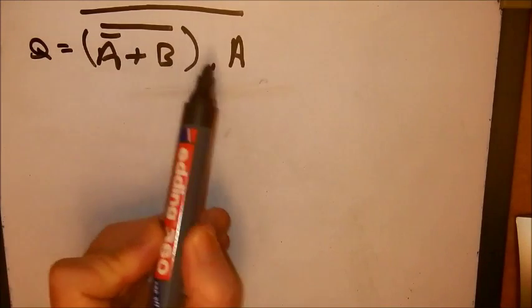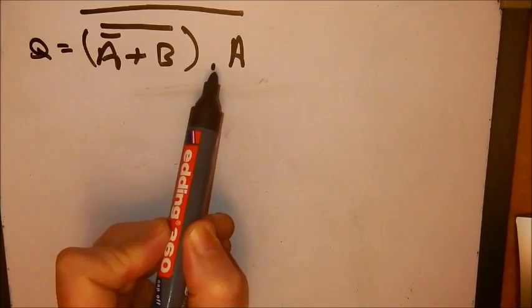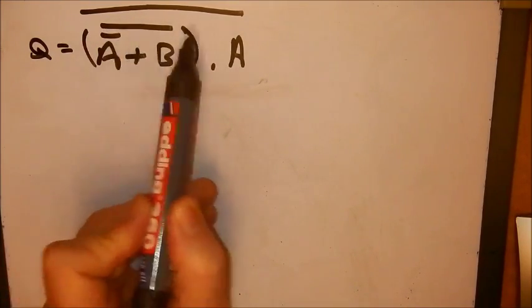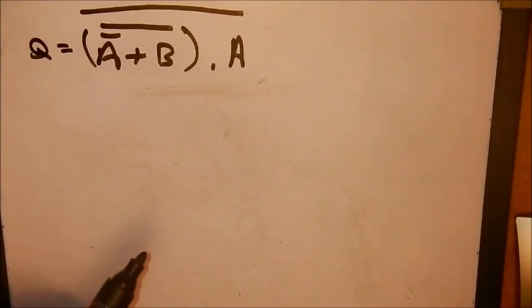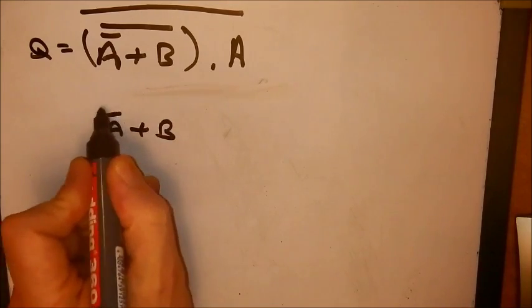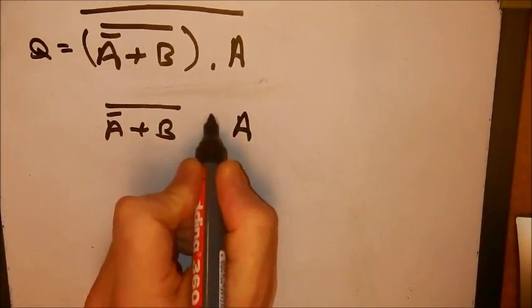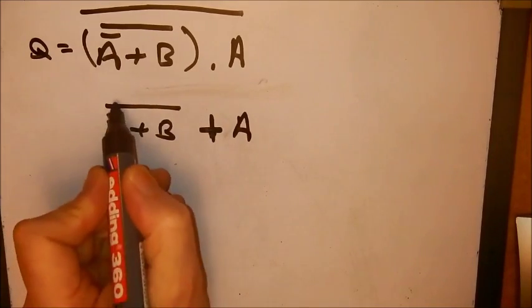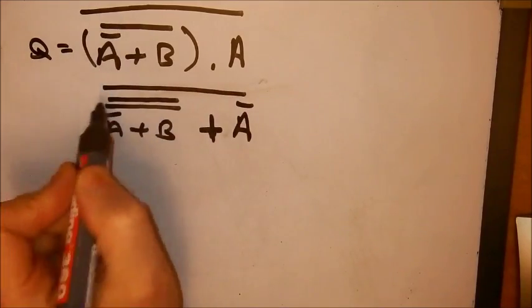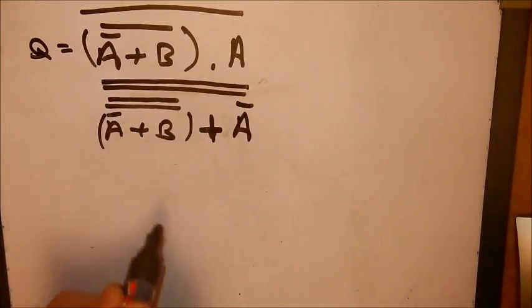But I've got a kind of gut feeling here that if I was to apply De Morgan's on the AND operator here, and I NOT the individual terms, it's going to allow me to simplify this side of the expression a little bit more. So let's give that a try. So we're going to keep this part the same, change the sign and NOT the individual terms. We already had the NOT from there and we'll NOT the lot. So we've just applied De Morgan's there.